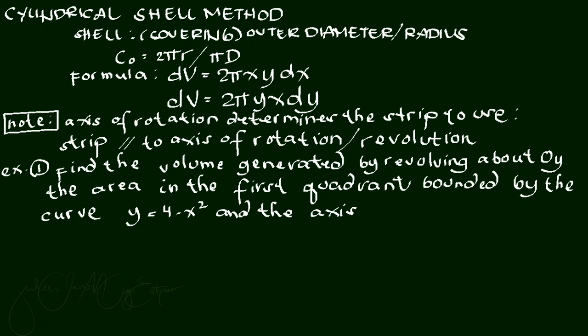We are finished with getting the volume of a solid using the circular disk method. Now we are going to use the cylindrical shell method. That is the shell — the covering that gets the outer diameter or radius rotated in the rectangular coordinate system. Let us recall the circumference formula: that is equal to 2πr or πd, since the cylindrical shell's base is a circle.